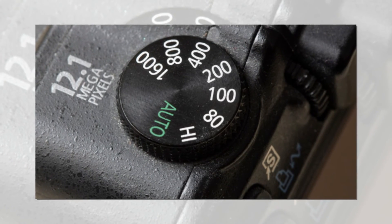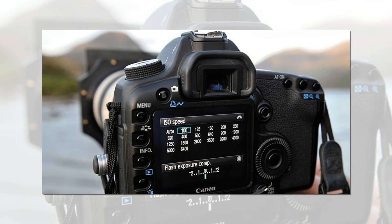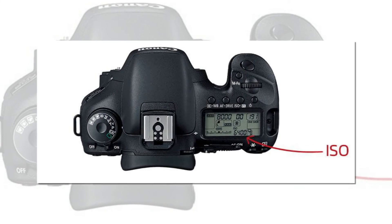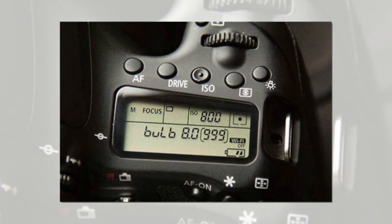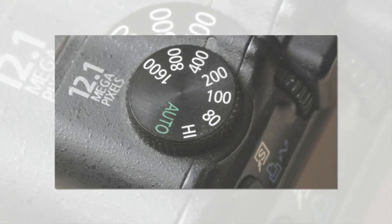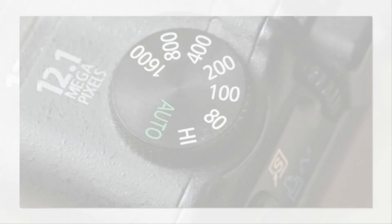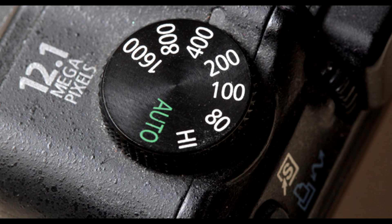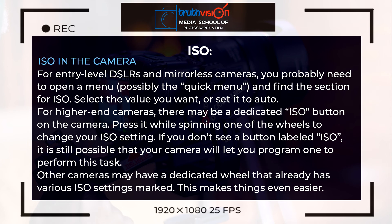Once you press the dedicated ISO button, you can use the wheel at the back of the camera to adjust to the ISO you want. If you don't see a button clearly labeled ISO, your camera may let you program a button to perform that task. Some cameras have a dedicated wheel with various ISO settings already marked, so you simply adjust from 200 to 400 to 800 as labeled. Different cameras have different settings, so I recommend reading the manual that comes with your camera.